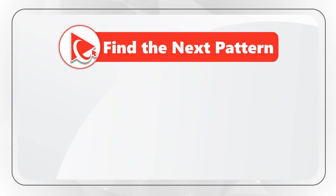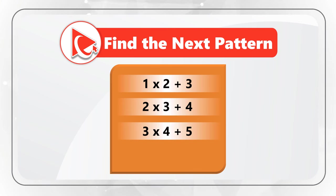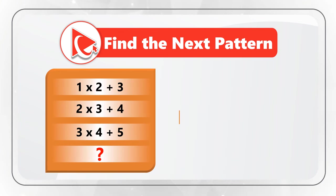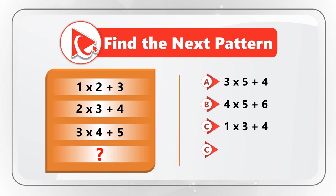You are presented with three patterns: 1 multiplied by 2 plus 3; 2 multiplied by 3 plus 4; 3 multiplied by 4 plus 5. Then comes the missing pattern to detect, from choices A: 3 by 5 plus 4; B: 4 by 5 plus 6; C: 1 by 3 plus 4; and D: 5 multiplied by 2 plus 3.